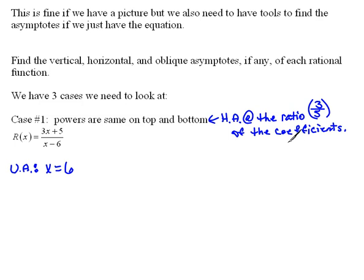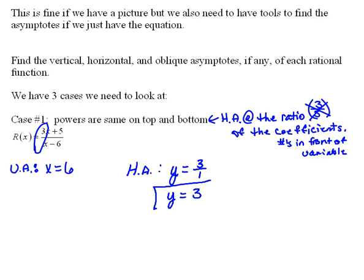So really, that's not too bad. We're talking about having a horizontal asymptote at the ratio or fraction of the coefficients - the numbers in front of the x's. So in this case, we have a horizontal asymptote at y equals 3 over 1, which is just y equals 3.